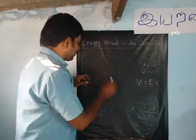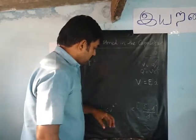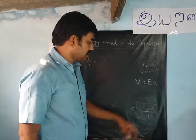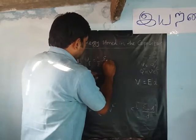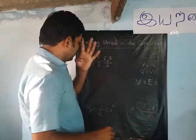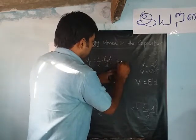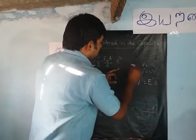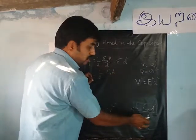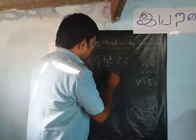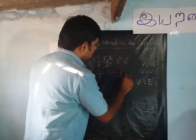The capacitance of a parallel plate capacitor is c equal to epsilon A by D. Replacing this in u suffix c equal to 1 by 2 c into v squared gives 1 by 2 into epsilon A by D into v squared. Since v is equal to electric field E into distance of separation D, v squared equals E squared into D squared. So we get 1 by 2 into epsilon A by D into E squared into D squared.